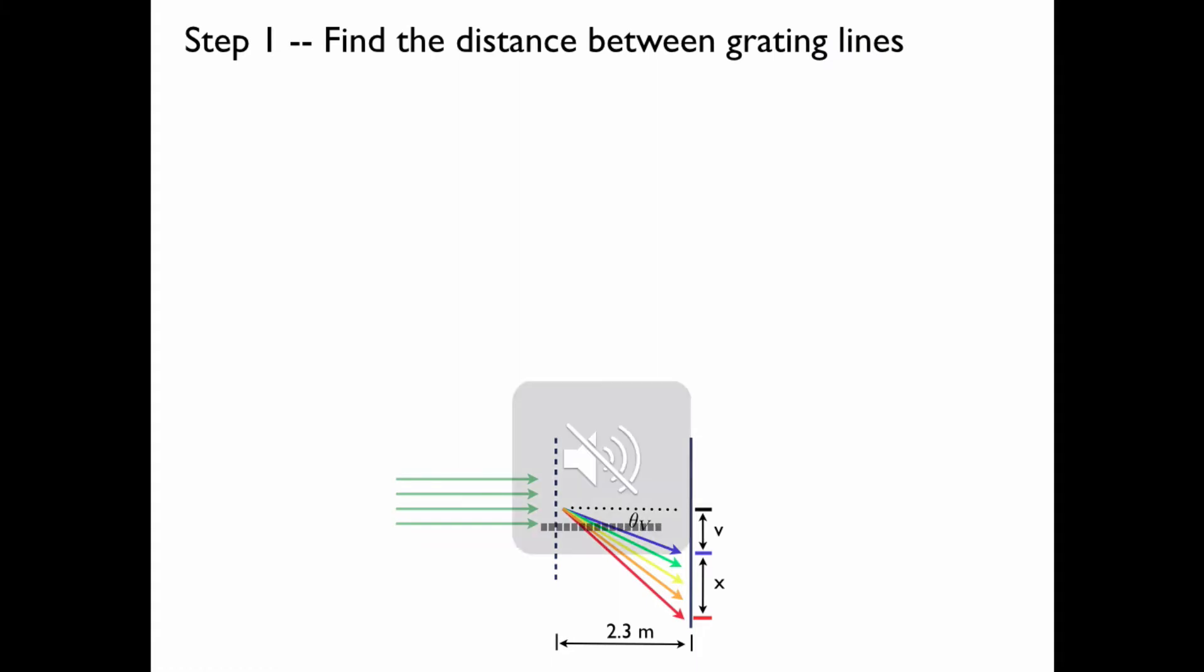First, we'll find the distance between the grating lines. We need to know this in order to perform the following calculations. It was stated in the problem that there are 8000 lines per centimeter, which means that the distance between two adjacent lines is 1 over 8000 centimeters.